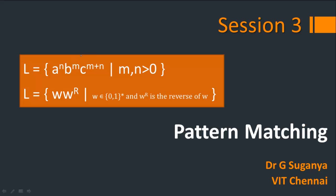This is another session to understand two more examples on designing the Turing machine. The first is a language of the kind a^n b^m c^(m+n), so the summation of these two has to be equated to c. The second is to check whether a given word and its reversal are components of a string — for example, if w = 010, its reversal is also 010.